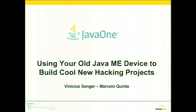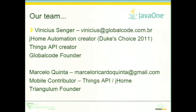Thanks for being here. Our Java ME talk is crowded and we are going to talk about using our old Java ME device — not just phone but device in general — to make cool projects. I am Vinicio Sanger. I work with Java more than 10 years. I've been writing code since I was 13 years old. I created a J-Home automation project last year and we won a Duke's Choice Award.